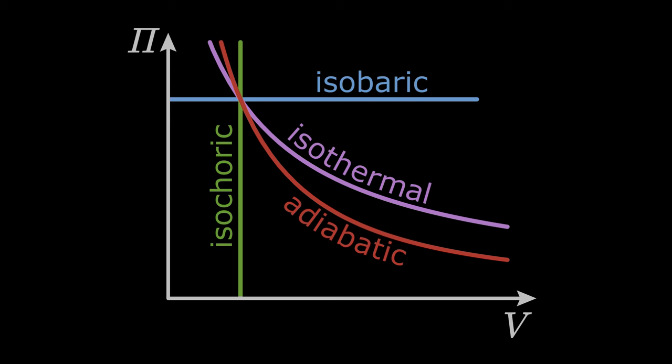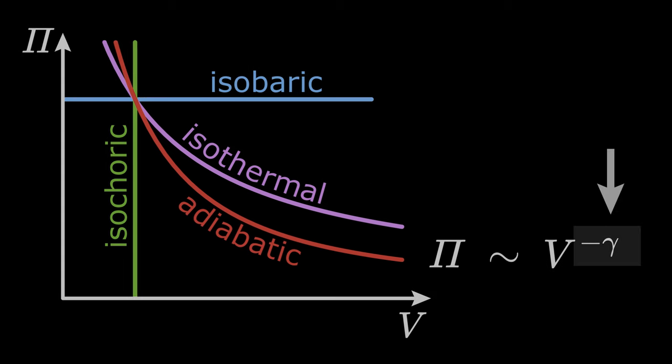This shows a power law behavior for an adiabatically behaving gas. The exponent gamma is referred to as the adiabatic exponent.